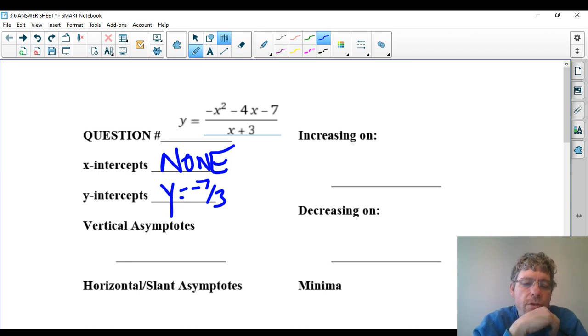Vertical asymptotes, those are easy. That's where the bottom equals 0, and that's obviously negative 3.